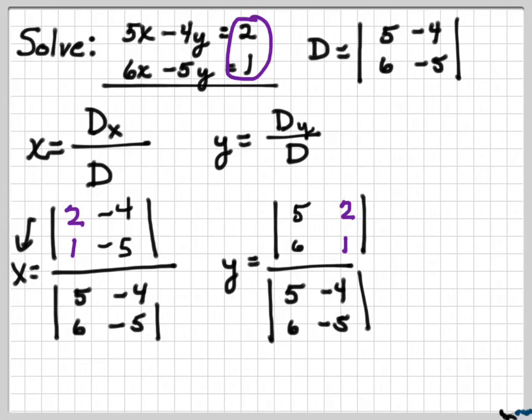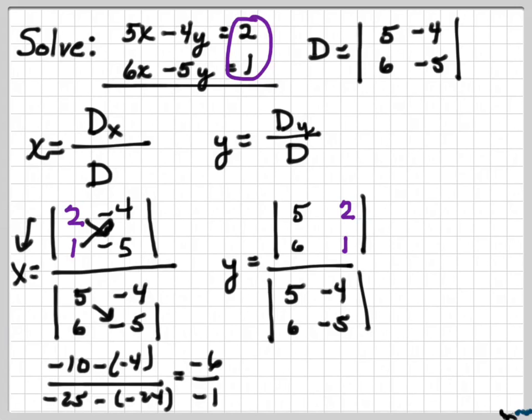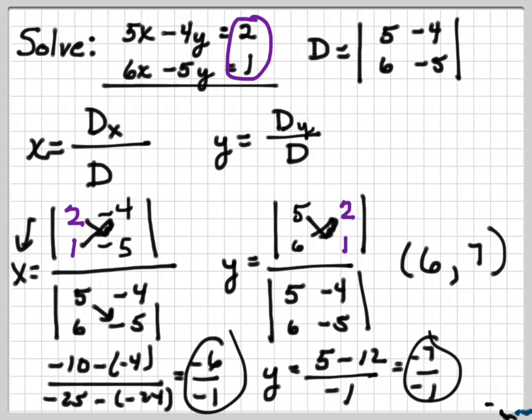Now you can do the calculations, and I'm just going to kind of run through these real quick. So we'll have negative 10 minus negative 24, which gives us minus 6 over minus 1. And the y is going to be 5 minus 12 over minus 1 again, because that didn't change, which is minus 7 over minus 1, so the coordinates for the point where these two equations intersect each other is 6, 7.